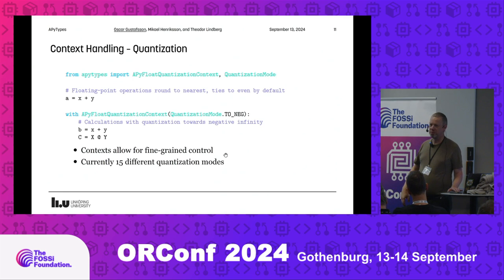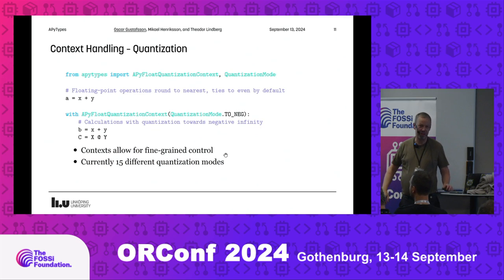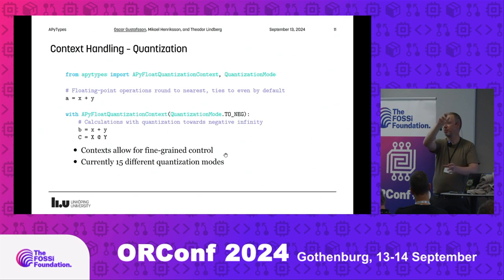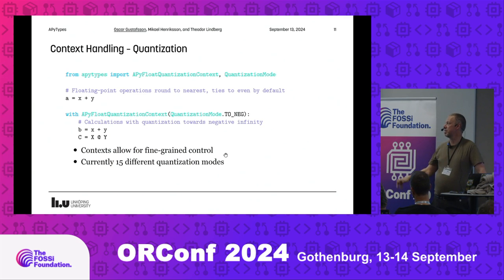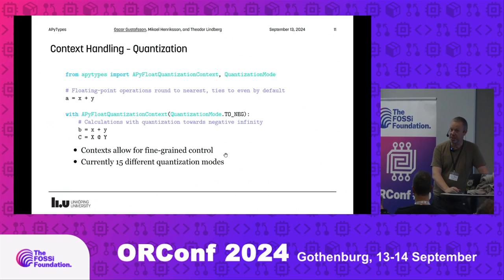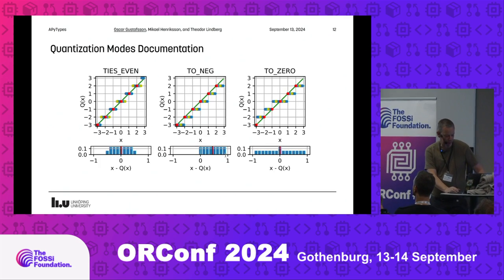We have 15 different quantization modes. The interesting thing is we also have stochastic quantization, which is relevant especially for short floating-point formats, because there's a risk that all machine-learning coefficients go towards zero — and that's not supported in many libraries. We can also control seeds for deterministic randomness, and we have decent documentation with error distributions showing how things round or quantize.